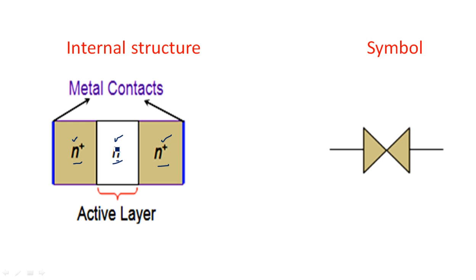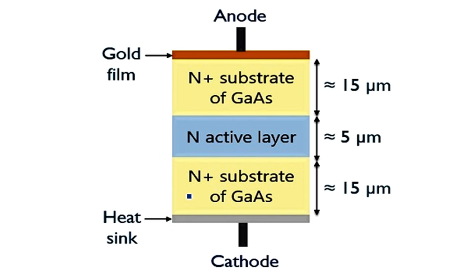This is the internal structure of the Gunn diode and its symbolic representation, which is different from a normal diode. One important point: there is no junction in transferred electron devices. A junction forms when p-type and n-type materials are connected side by side, but here all three regions are n-type, so no junction exists.